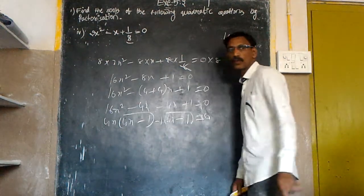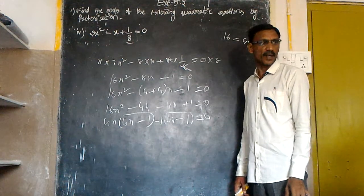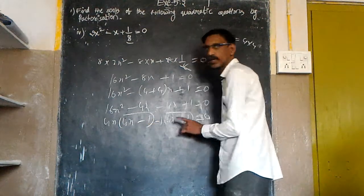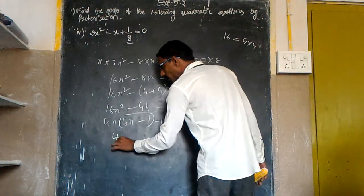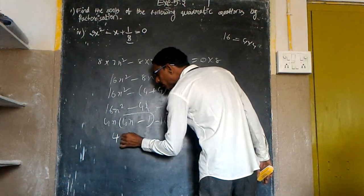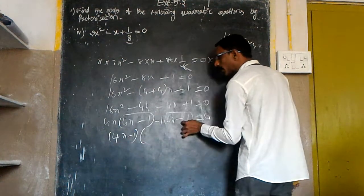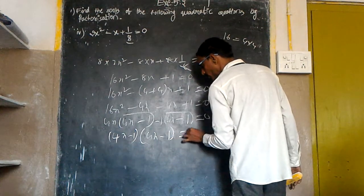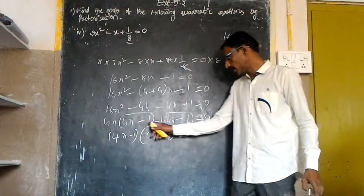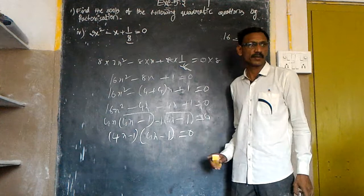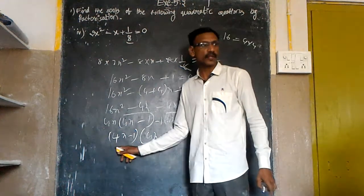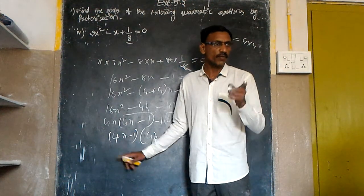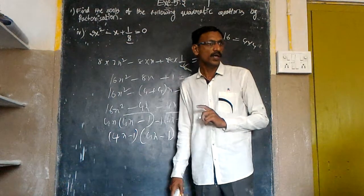I would like to take 4x minus 1 is common between these two terms. I would like to get (4x minus 1)(4x minus 1) is equal to 0. So product of two terms is 0, then any one of them must be equal to 0.